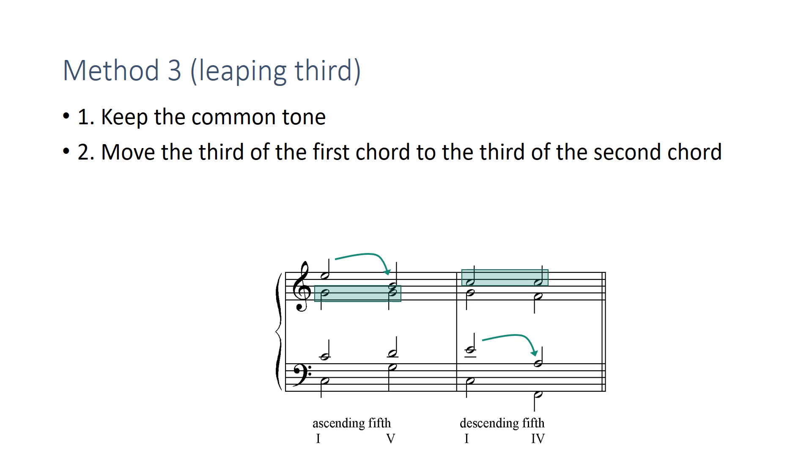What happens in the third voice? The other remaining voice, it just moves by step to make sure you have the right doublings. Two roots, one third and one fifth. So the potential benefit of this is one of the voices has an expressive leap. That's the leaping third method.